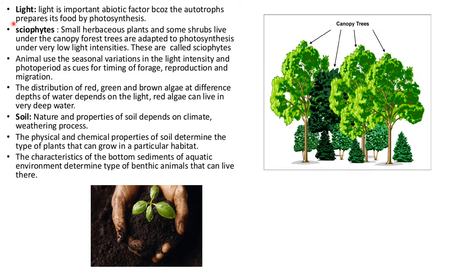The next abiotic factor is light. It is important because autotrophs — plants — prepare food by photosynthesis. Small herbaceous plants and some shrubs that live under the canopy of forest trees are adapted to photosynthesis under very low light intensity; these are known as sciophytes. Animals use seasonal variation in light intensity and photoperiod as cues for the timing of foraging, reproduction and migration.